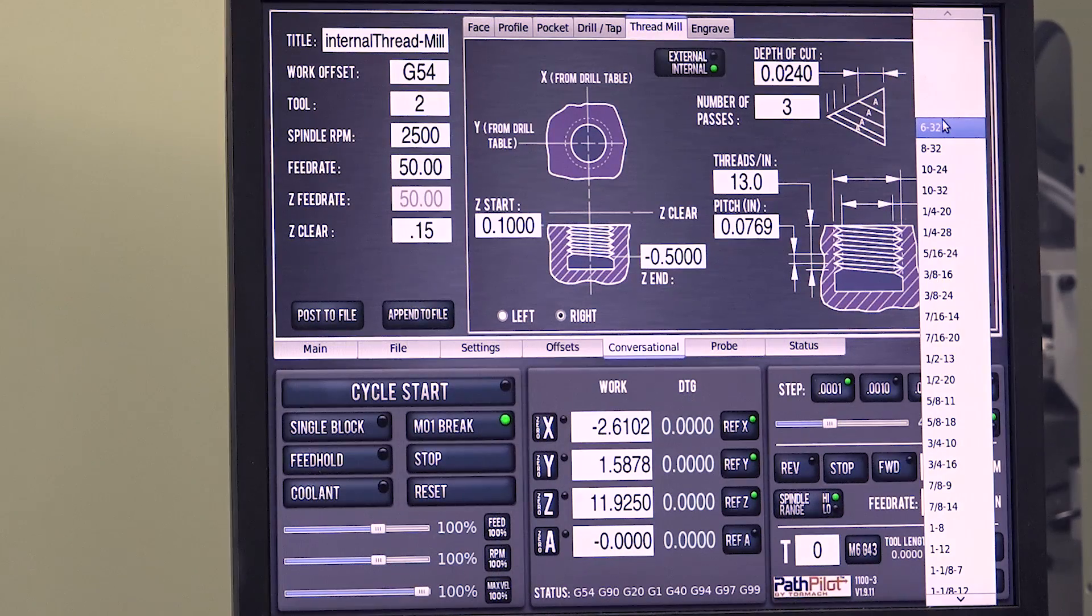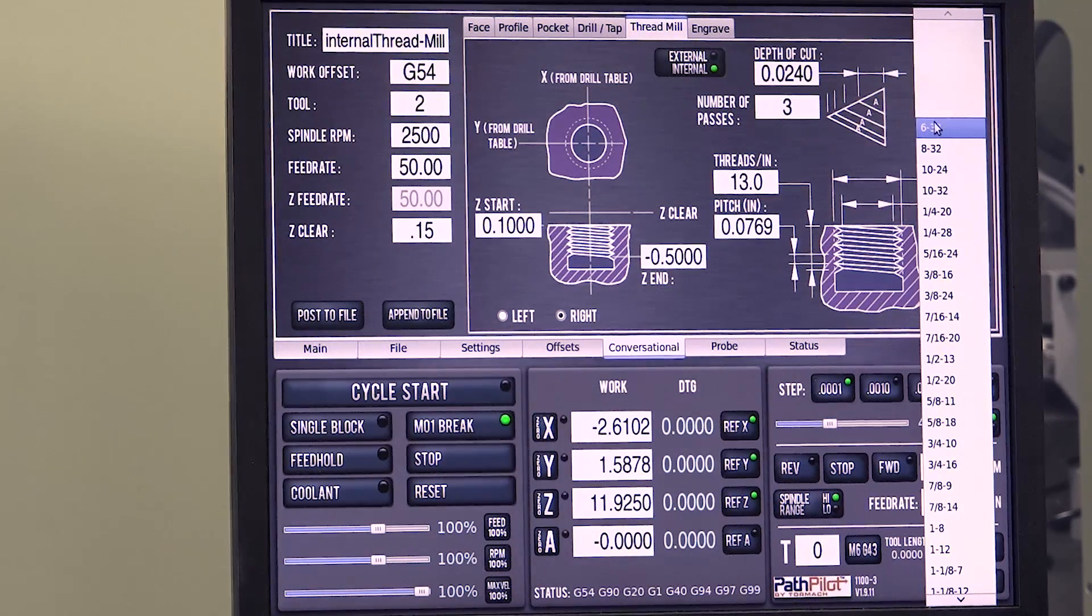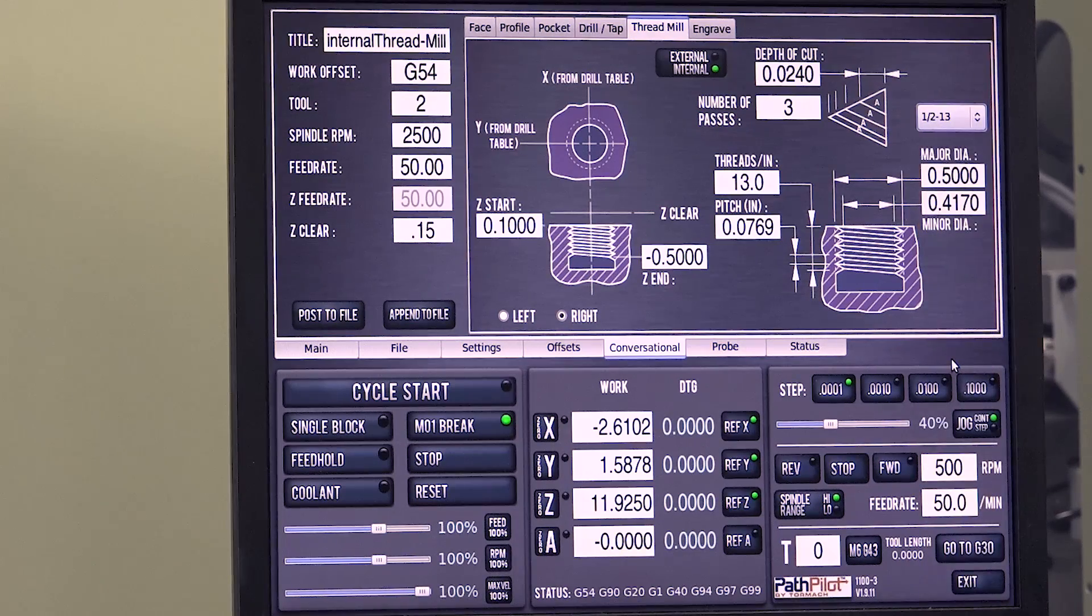This drop-down here has a number of common thread values, so if you're going to make a half 13 or a half 20, you can select from that list.